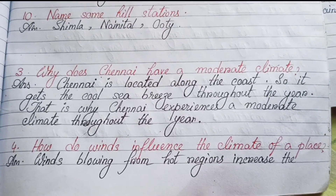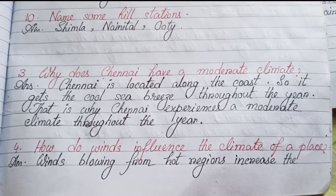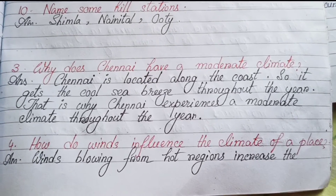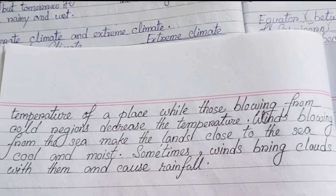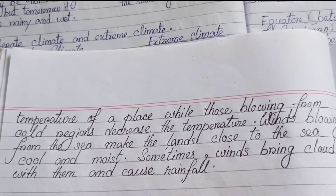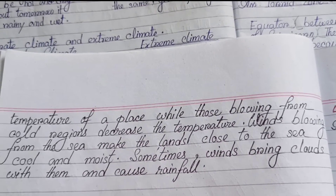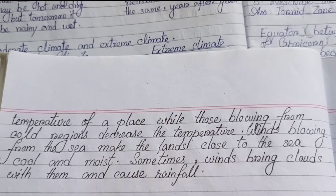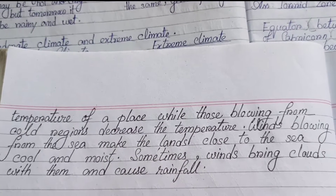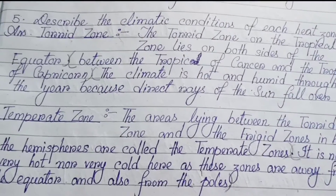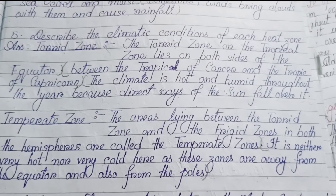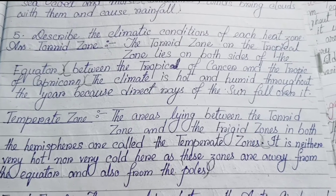Number four: How do winds influence the climate of a place? Winds blowing from warm regions increase the temperature of a place, while those blowing from cold regions decrease the temperature. Winds blowing from the sea make the lands close to the sea cool and moist. Sometimes winds bring clouds and cause rainfall.